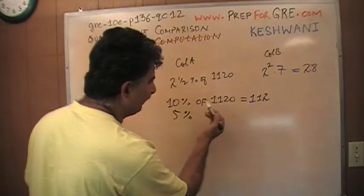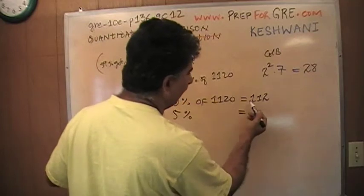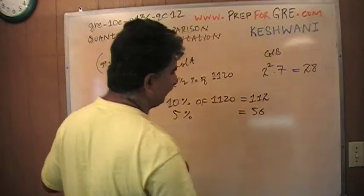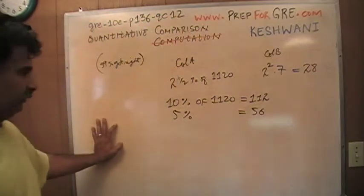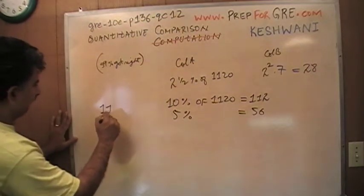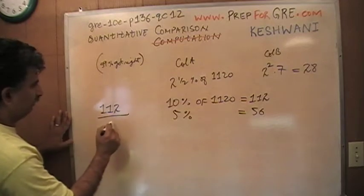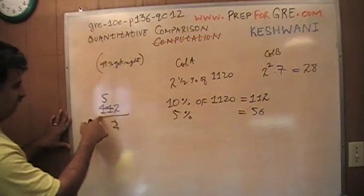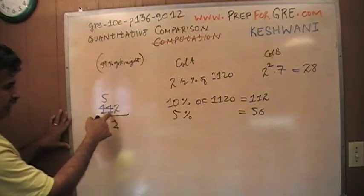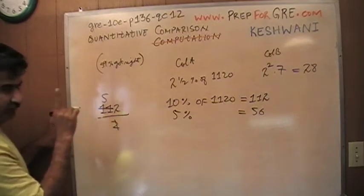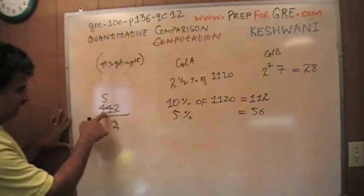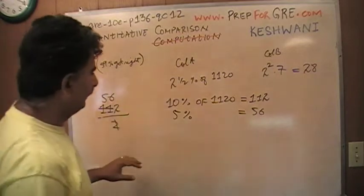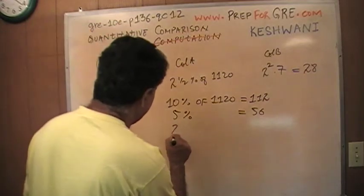What is 5%? 5% is going to be half of that amount. 112 divided by 2: 2 goes into 11 five times, one remainder comes over here, 1 and 2 becomes 12, 12 divided by 2 is 6. So that's 56. What about 2.5%? 2.5% is going to be half of that. 5 goes into 2 times, that 1 goes there, it becomes 16, and that's 28.